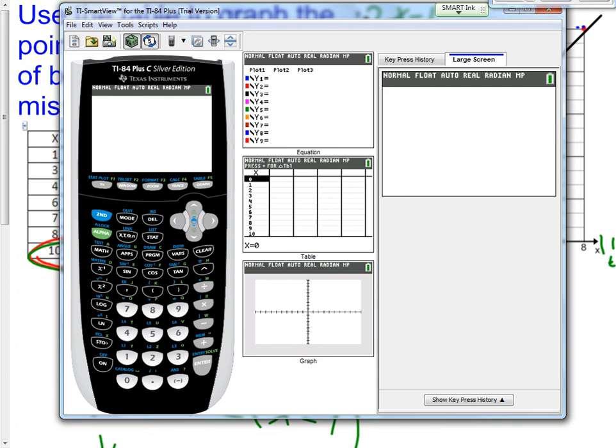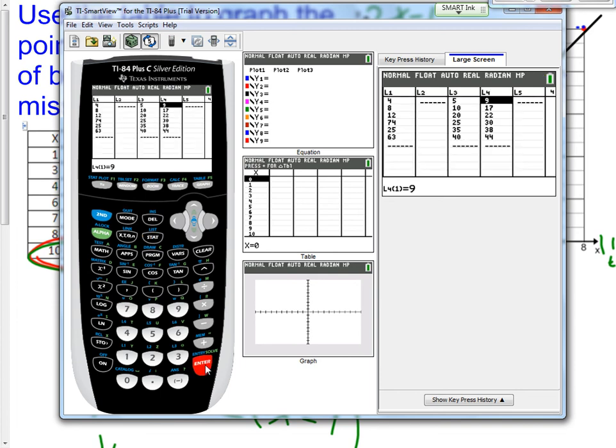The first button you're going to push is you're going to press stat. It is the third column, second row. So, it's right there, stat. Now, go over one column. Sorry, sorry, never mind. Stay right here and go to edit. So, press enter. Now, you see all these lists. L1, L2, L3, L4, L5. That stands for list 1, list 2, list 3, list 4, list 5, so on and so forth.